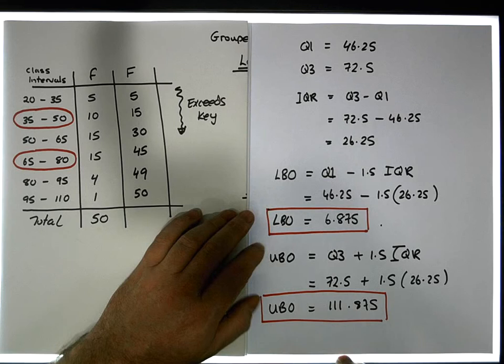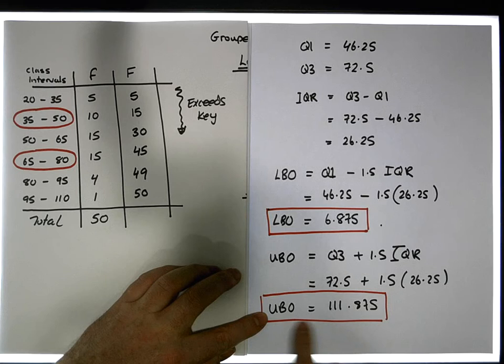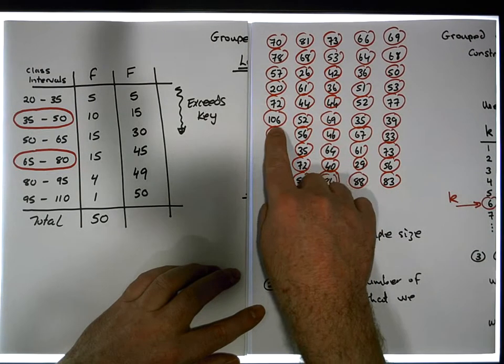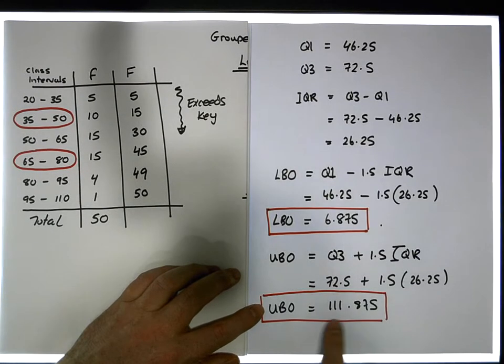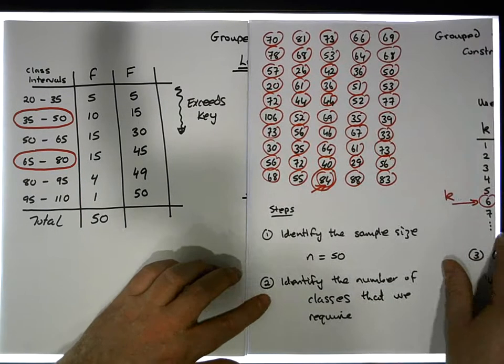Now let's have a look at the upper bound outlier position. The upper bound outlier position is at 111.875, so any value greater than that is classified as unusually large with respect to the rest of the data set. Now our largest value that we had was 106. Now 106 is actually less than this upper bound position. So actually, there's no values in our data set that are classified as upper bound outliers.